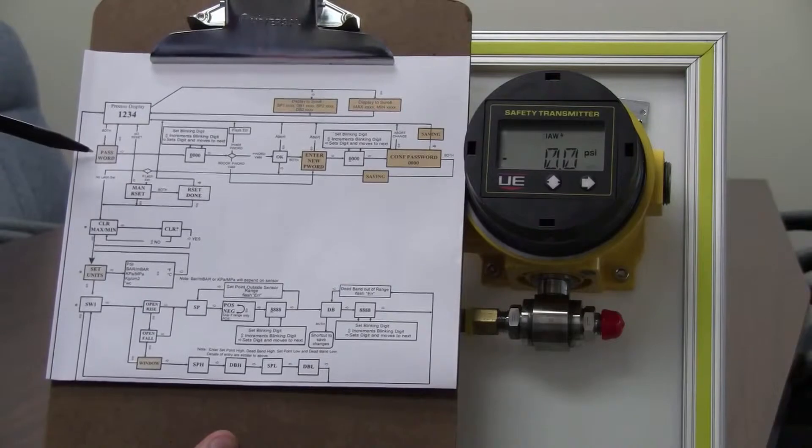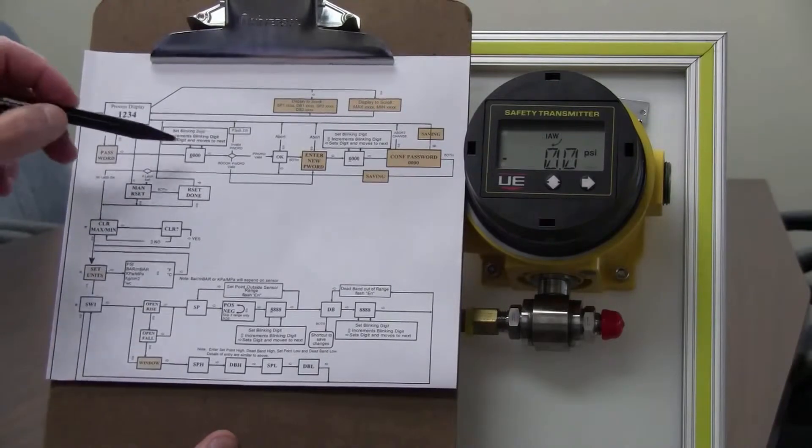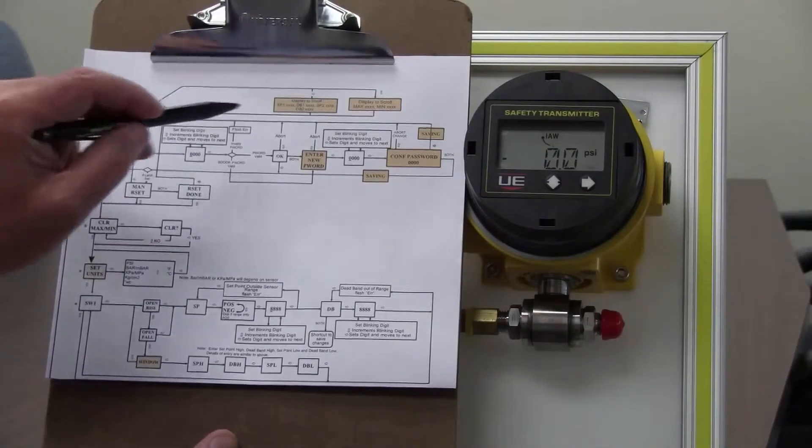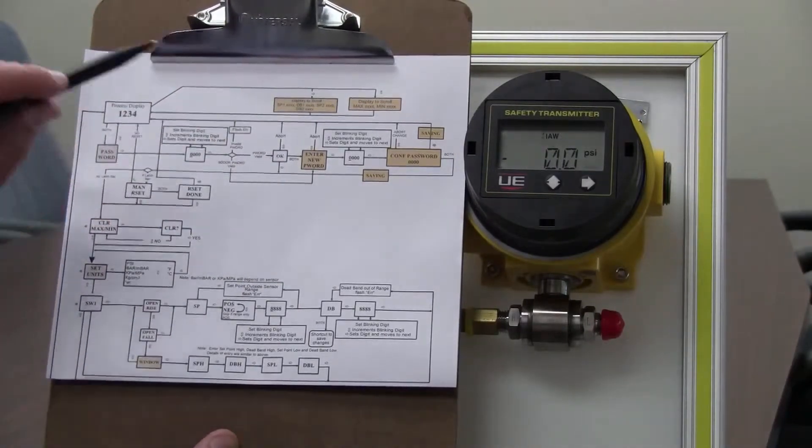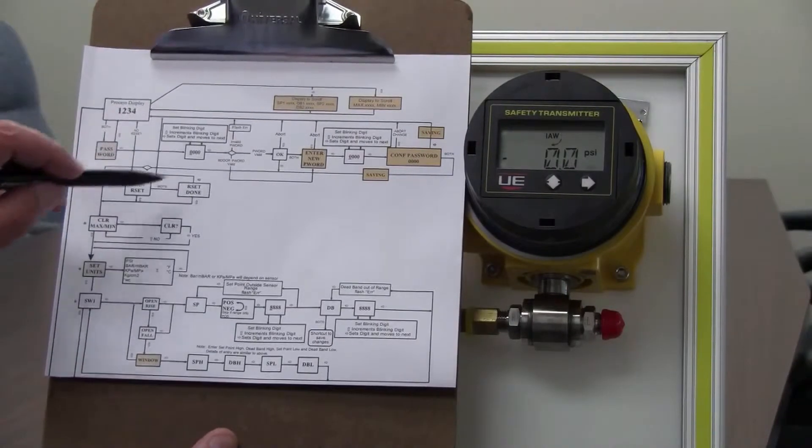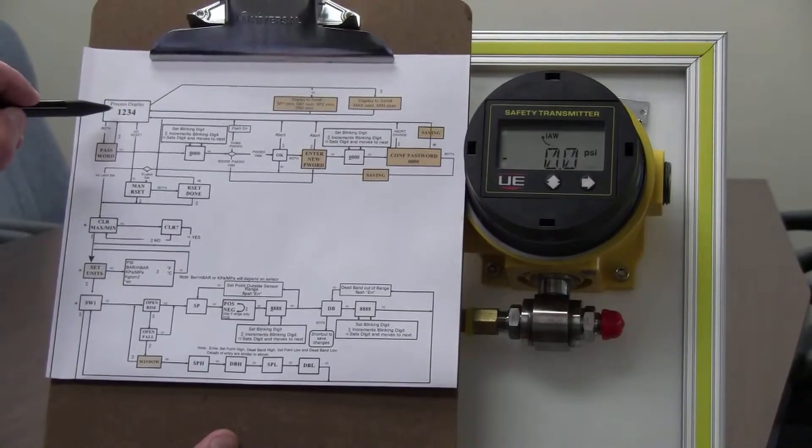That allows us to enter the password. The default password is all zeros and I'll show you that in just a moment. And once we successfully enter the password then we are in the editing mode and we can make changes to the software. But everything starts here at the process display.